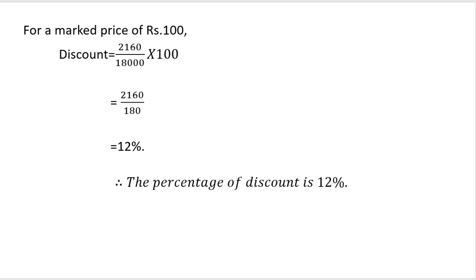Now we have to find the discount percentage. Percentage discount equals 2,160 divided by 18,000 into 100. Cancel the values: 2,160 divided by 180 gives us 12. So the percentage of discount is 12%, and the discount amount is 2,160 rupees.